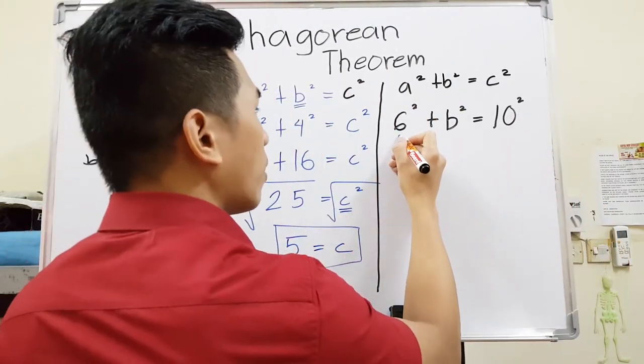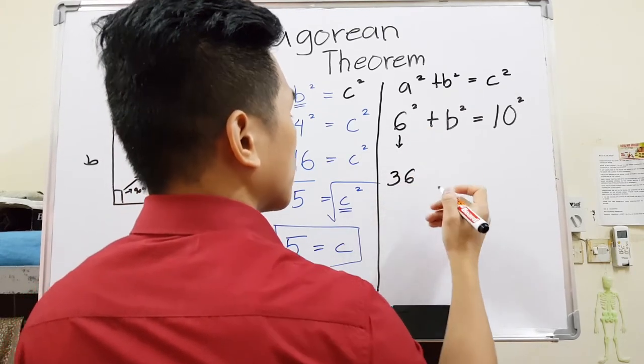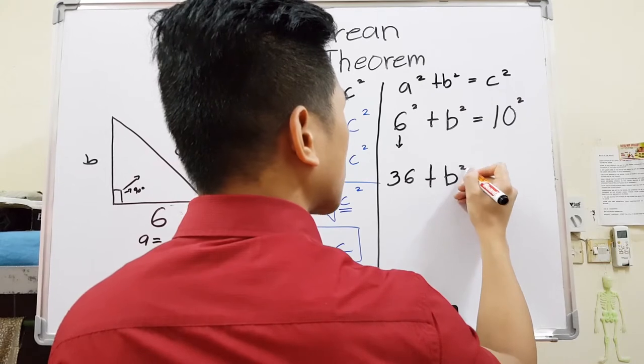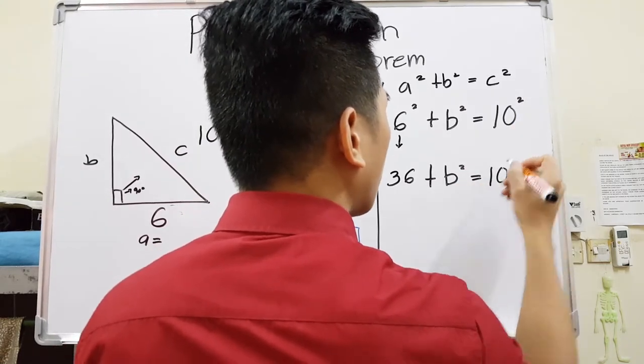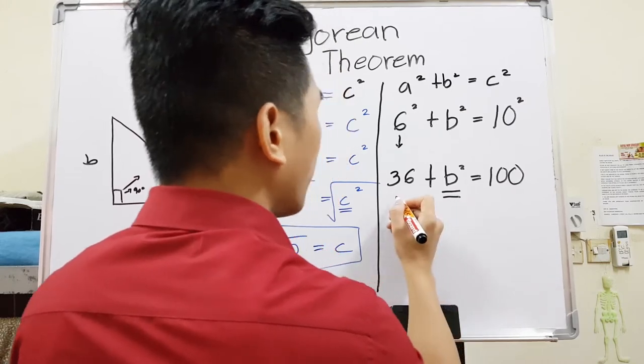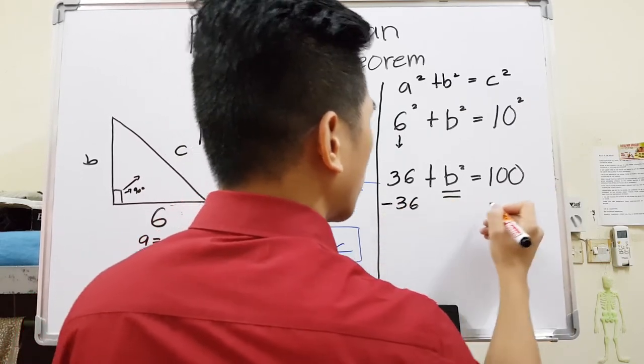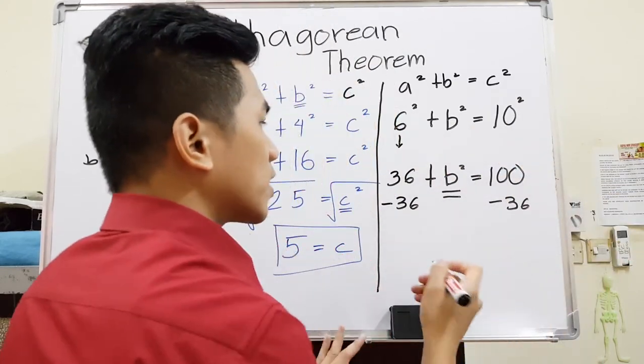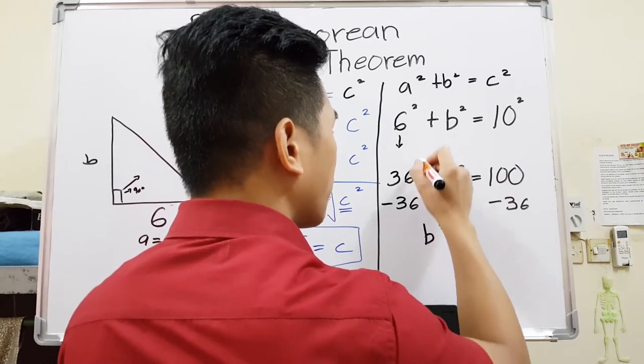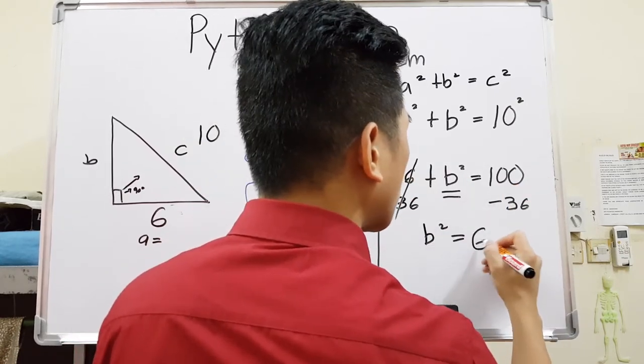Just simplify one by one. Square of 6, 36, plus B squared. Stay the same. 10 squared is 100. Now I want my B, so I have to move this 36 to the other side by taking it out here. So minus 36, minus 36. Or you can just bring it on the other side and change the sign. B squared is what I have left here, equals 100 minus 36, which is 64.